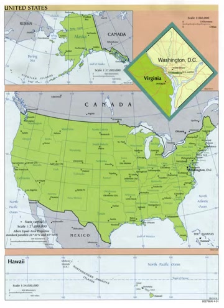There are also numerous special district governments in existence throughout the various states. According to the U.S. Census Bureau, such governments are independent, special purpose governmental units other than school district governments that exist as separate entities with substantial administrative and fiscal independence from general purpose local governments. Special district governments provide specific services that are not being supplied by existing general purpose governments. Most perform a single function, but in some instances their enabling legislation allows them to provide several, usually related, types of services. The services provided by these districts range from such basic social needs as hospitals and fire protection to the less conspicuous tasks of mosquito abatement and upkeep of cemeteries. The Census Bureau classification of special district governments covers a wide variety of entities, most of which are officially called districts or authorities.